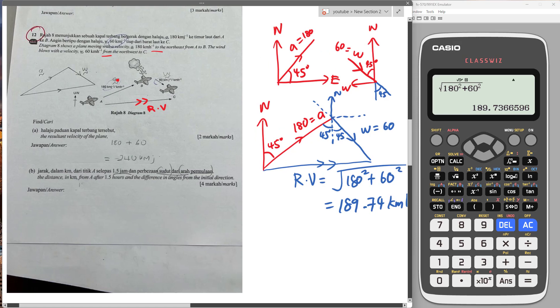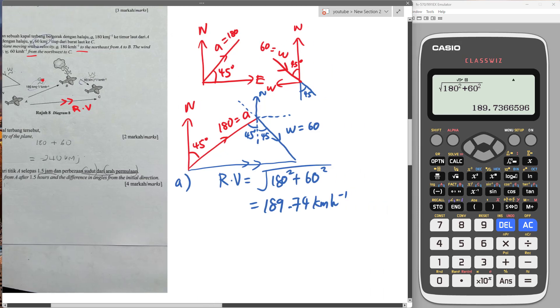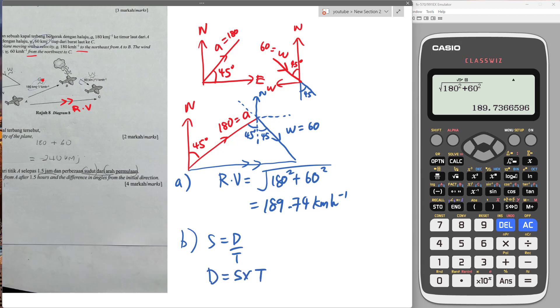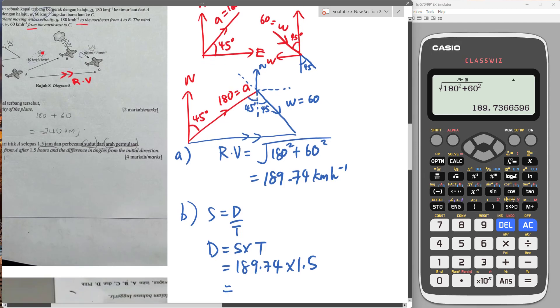Part B asks us to find the distance from A after 1.5 hours. We know the resultant velocity. In one hour, I actually travel 189.74 kilometers. Speed equals distance over time. Therefore, distance is speed multiplied by time. We know the speed is 189.74, and we just multiply by 1.5 hours. Then we should be good.